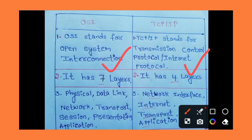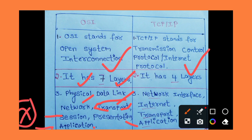The OSI reference model has seven layers. The first layer is the Physical Layer, followed by the Data Link Layer, Network Layer, Transport Layer, Session Layer, Presentation Layer, and Application Layer. The Transport Layer is the middle layer. The first layer is the Physical Layer and the seventh layer is the Application Layer.